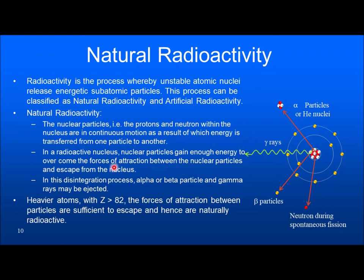This disintegration process could emit either alpha particle or beta particle and gamma radiation. Mainly, natural radioactivity happens in atoms which are heavier — that is, having atomic number greater than 82 — because the forces of attraction between the particles are sufficient for escape. Hence, they are naturally radioactive.